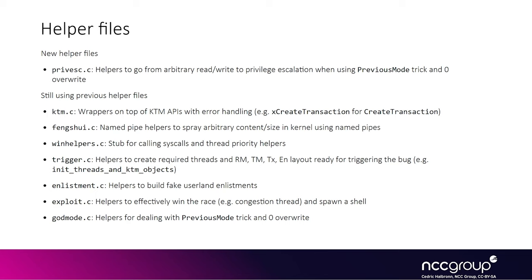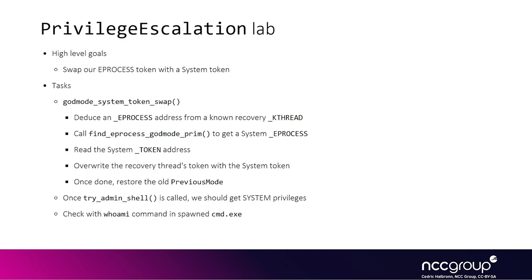Most files in the lab are exactly the same as the previous lab, but we introduce a new file called prevesc.c, which contains the code to inject the code mode and list entries and the code to walk the linked list of EPROCESS structures to find the system process. The goal of this lab is to spawn a shell with system privileges by swapping our exploit EPROCESS token to hold the system token instead.